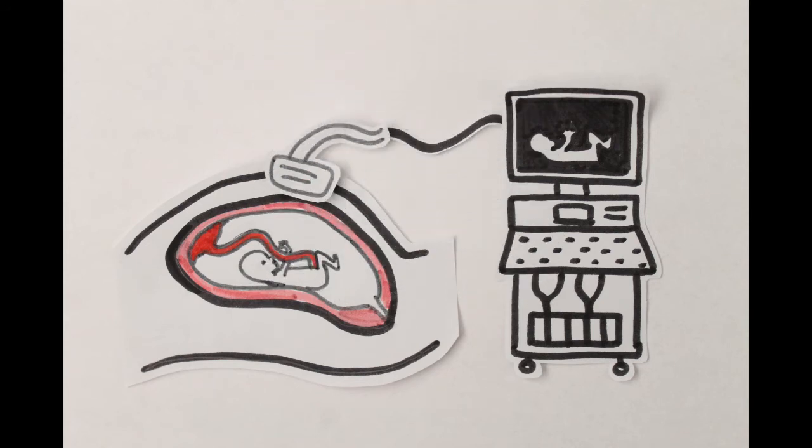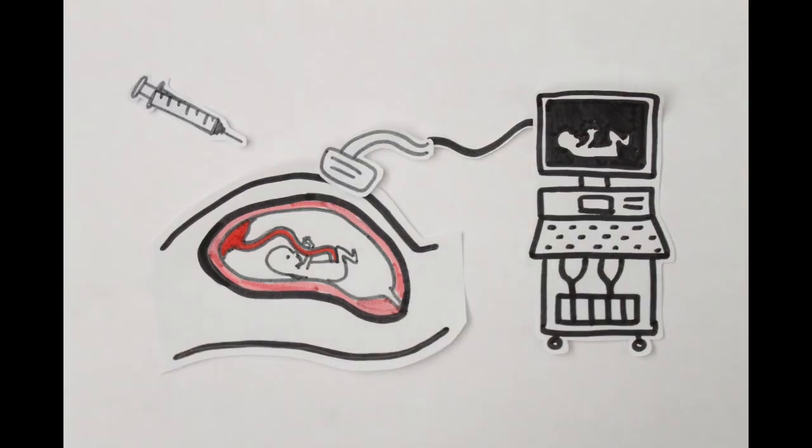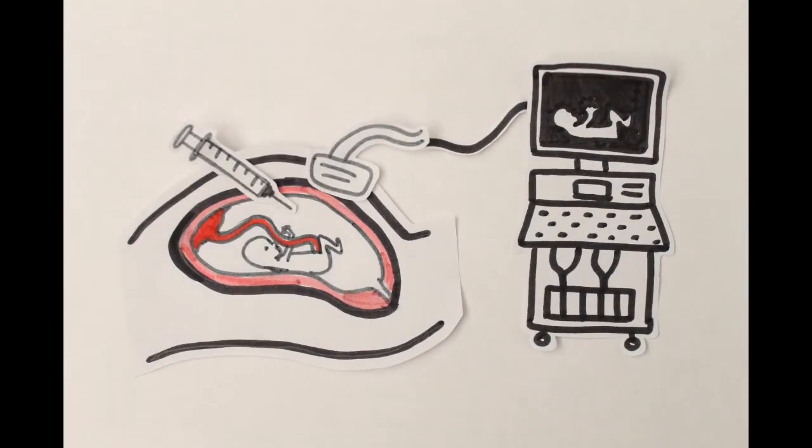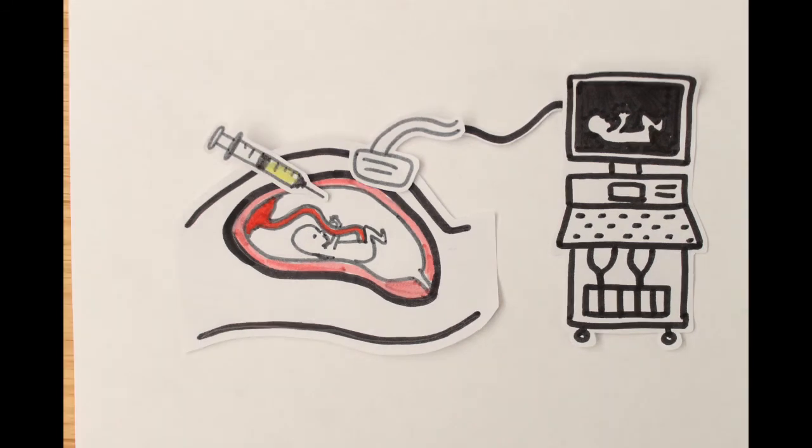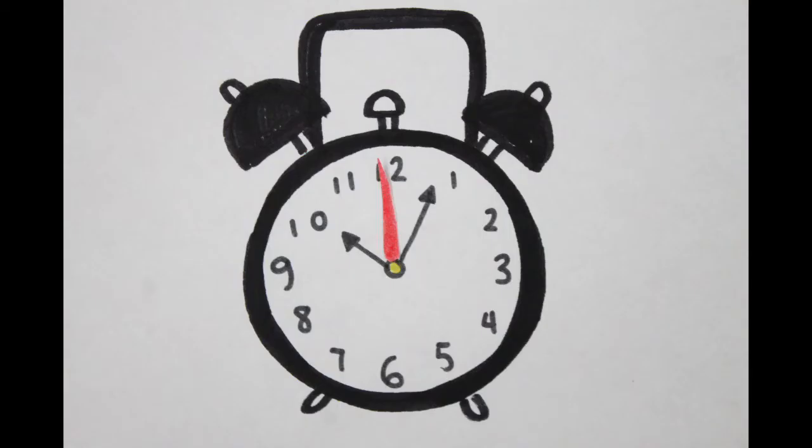Once the position of the baby, placenta, and amniotic fluid are located, a 20 to 22 gauge needle is inserted through the abdominal and uterine wall to draw out 15 to 30 cc of amniotic fluid. It is important to note that the needle does not come in contact with the baby or the placenta. The removal of the amniotic fluid takes roughly 1 minute to complete.